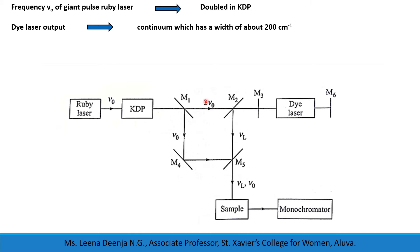The second harmonic frequency 2ν₀ is used to pump the dye laser. In the dye laser, the optical resonant cavity is formed by a partially reflecting mirror M3 and a fully reflecting mirror M6. The output of the dye laser, of frequency νL, is directed into the sample using mirror M2. The output frequency ν₀ of the ruby laser and the output frequency νL of the dye laser are directed into the sample using mirrors M4 and M5. The dye laser output is a continuum with a width of about 200 cm⁻¹. By recording this in a spectrograph, different portions of the Raman spectrum can be covered depending on the dye and its concentration.